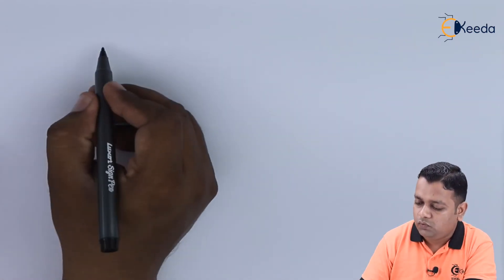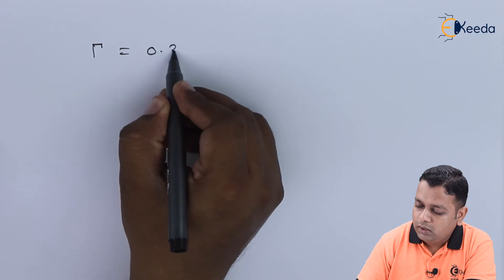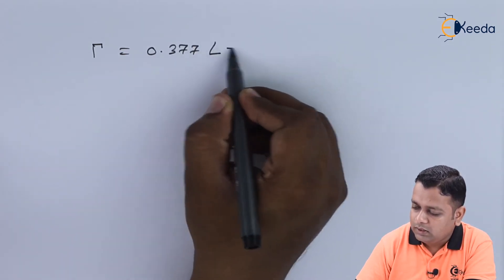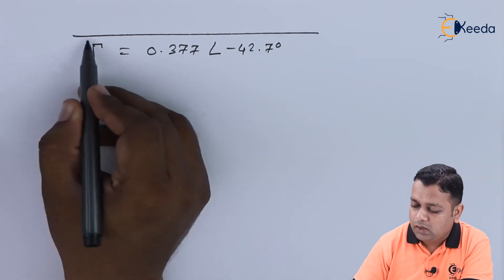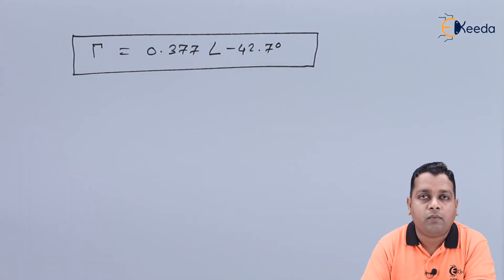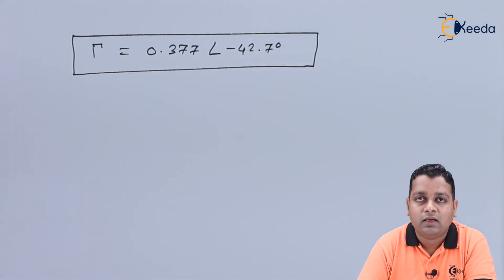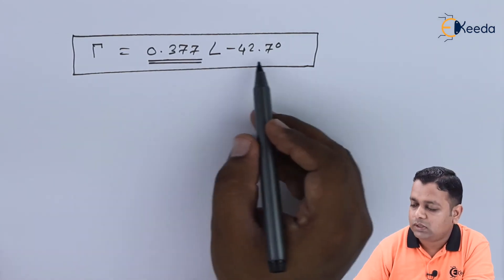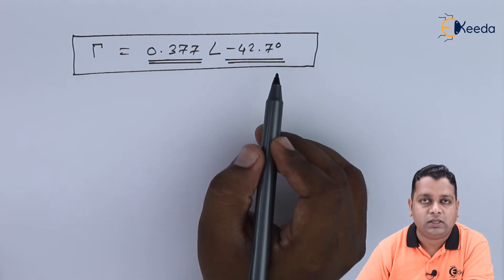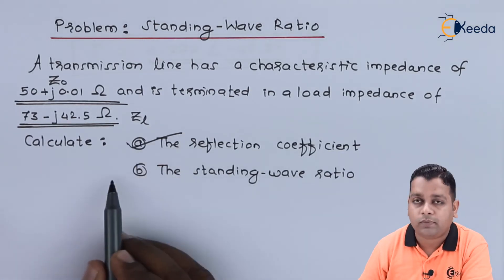In the denominator we put (73 minus j×42.5) plus (50 plus j×0.01). After substitution, we calculate the reflection coefficient gamma. This equals 0.377 at an angle of minus 42.7 degrees. To obtain this answer, we made the conversion from complex representation (a + jb) into polar form, where the magnitude and angle are determined. The magnitude is 0.377 and the angle is minus 42.7 degrees. This is the answer for part a.